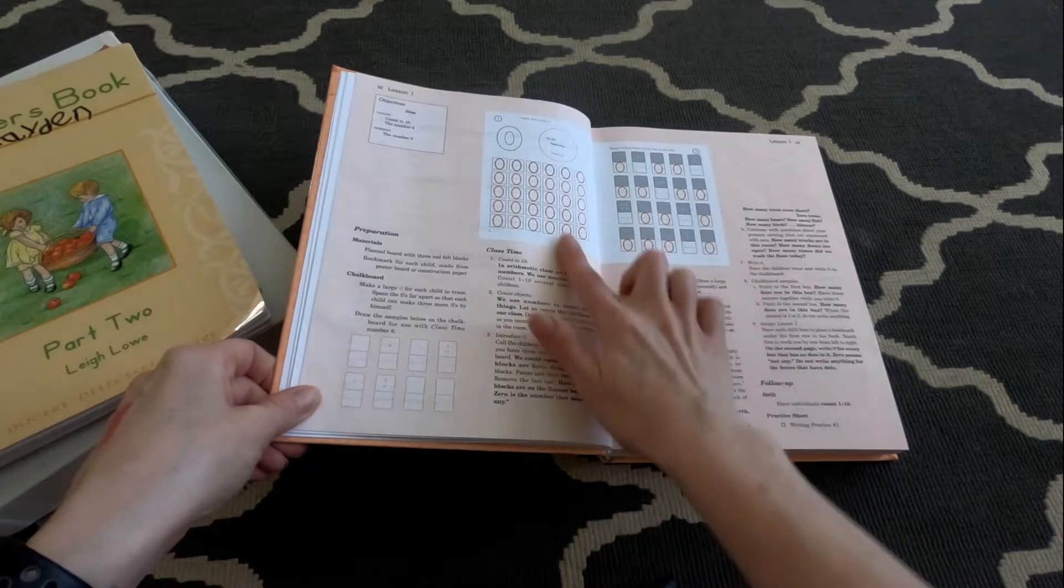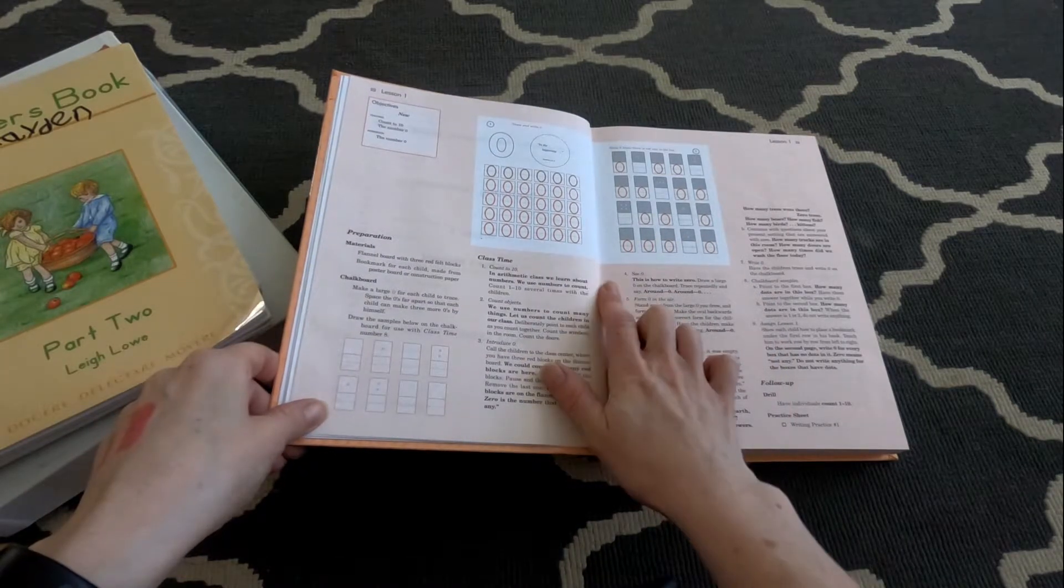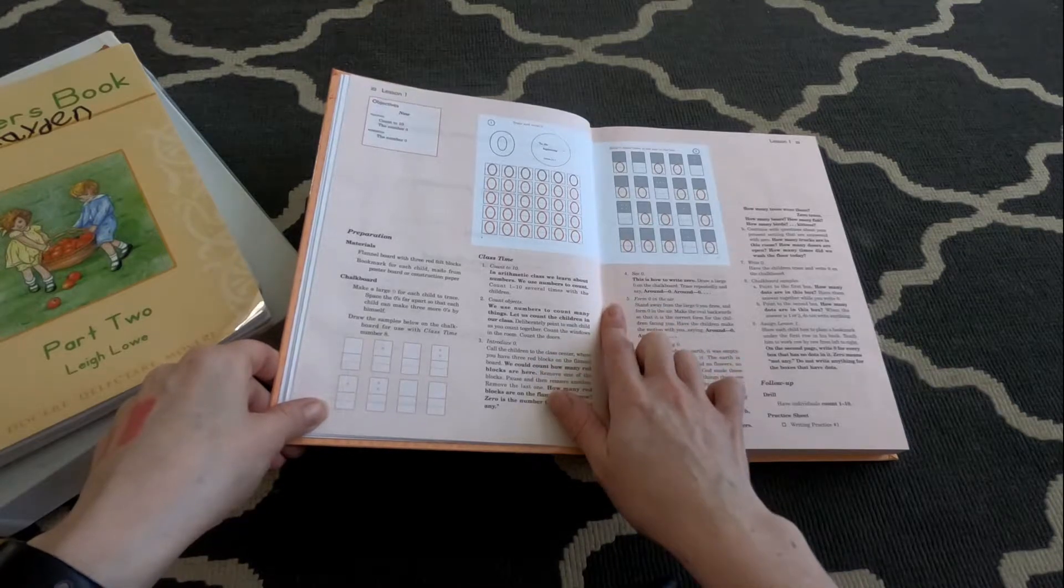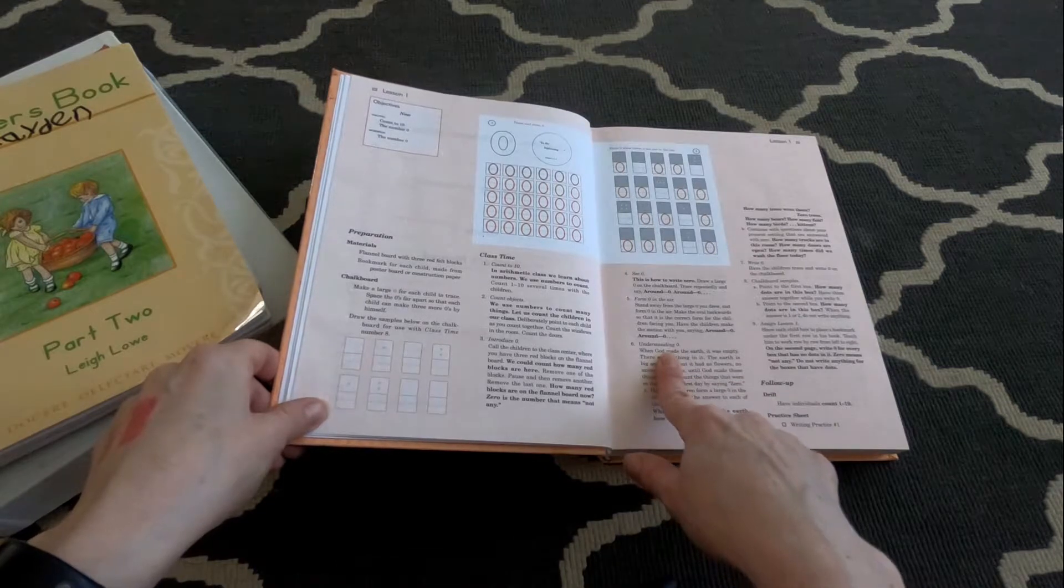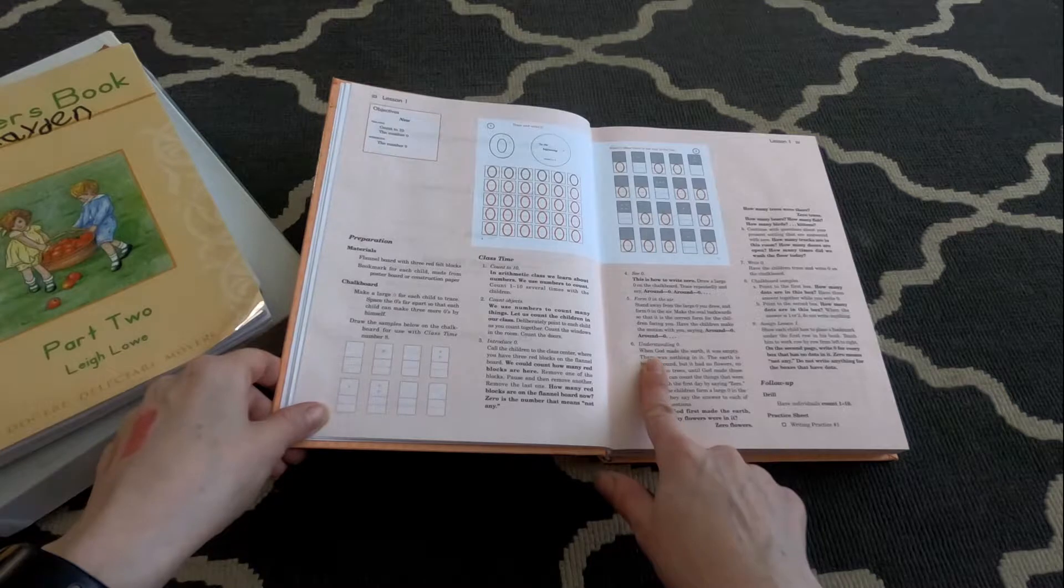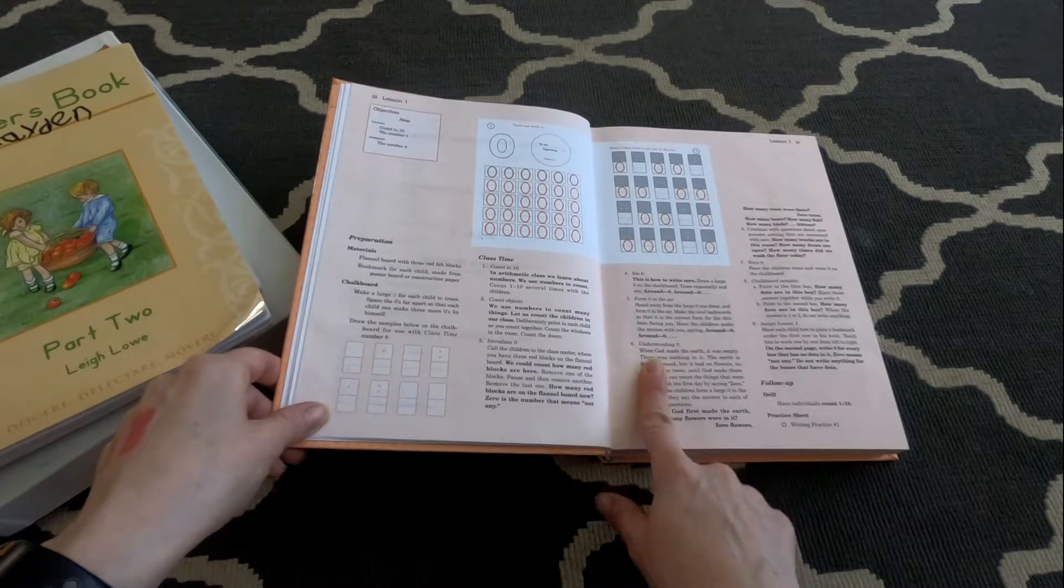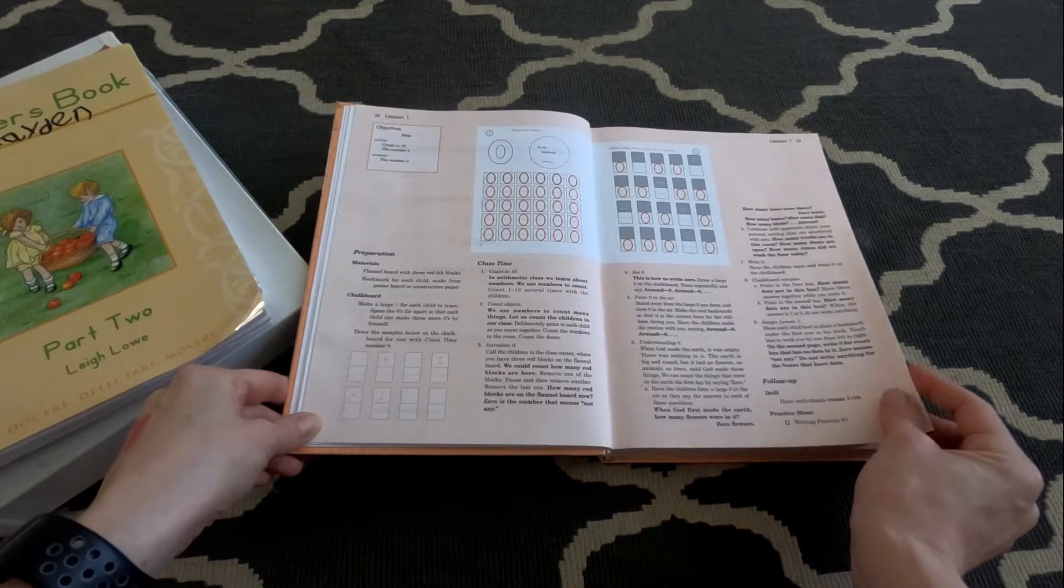So they start with numbers. Most kindergartners would know their numbers already, but we review numbers. There's usually a Bible lesson kind of correlated in it. Some days it's really forced, some days it flows naturally, like in understanding zero, it talks about how God created the earth and there was nothing, zero.